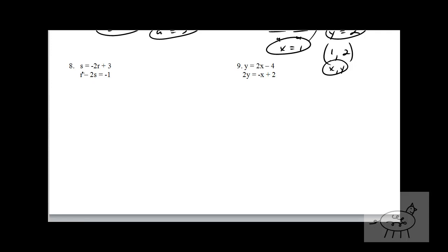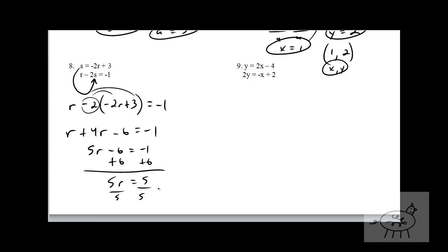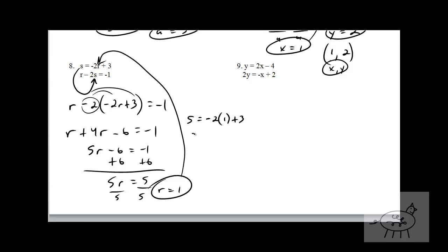Last two here. I've solved for s, so I'm going to plug it into that s in the other equation. So r minus 2 times s — well, what's s? Negative 2r plus 3. Put parentheses around it because I need to distribute that negative 2 to both terms. So: r plus negative 2 times negative 2r is plus 4r, and negative 2 times 3 is negative 6, equals negative 1. So 5r minus 6 equals negative 1. Add 6 — 5r equals 5. Divide by 5 — r equals 1. Plug into the solved equation: s equals negative 2 times 1 plus 3, so s equals 1.